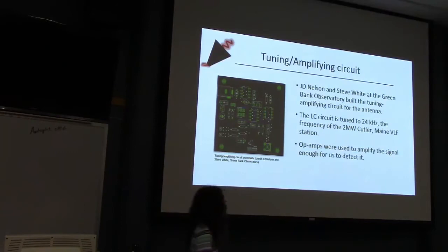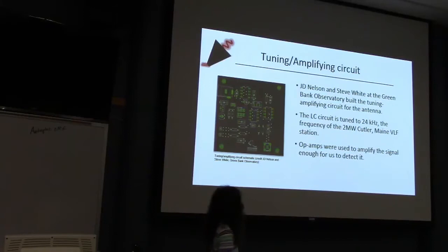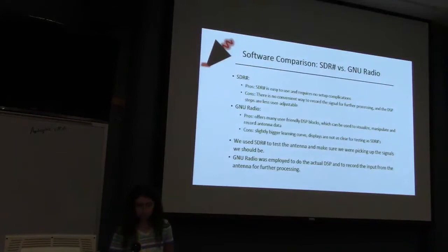The tuning and amplifying circuit used with this antenna was developed by J.D. Nelson and Steve White for their observatory. We've been through several iterations of the circuit board — probably around two or three. It's tuned to 24 kHz, the frequency of very low frequency stations like NWC, and the components used to amplify the signal are op-amps, which should provide a good solid detection.